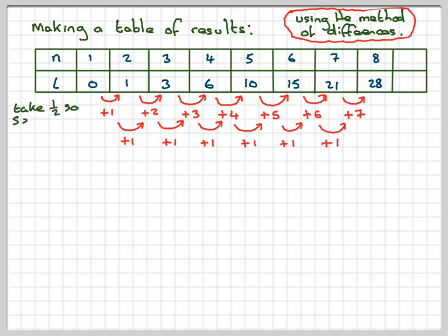So if that's the case, you always take half of this number here, and then you put that in front of n squared. So the sequence starts with a half n squared.